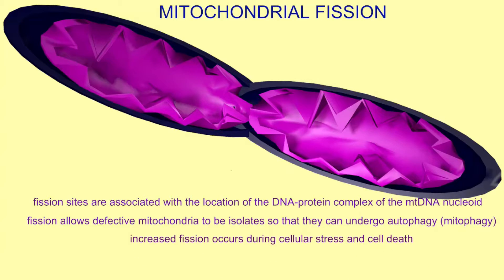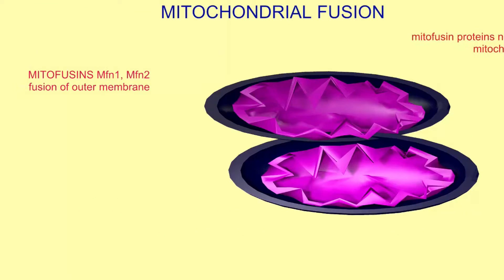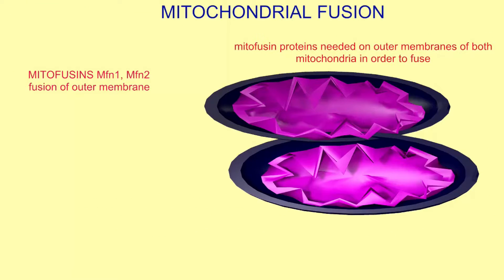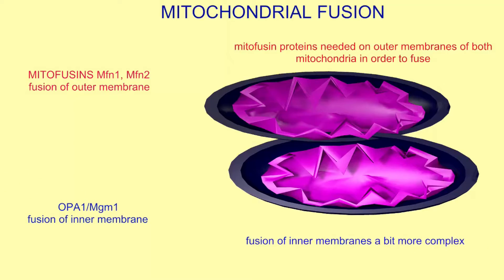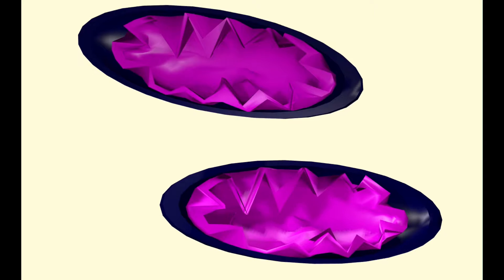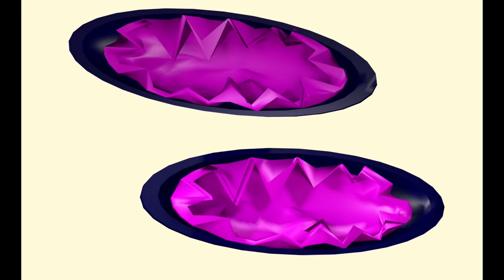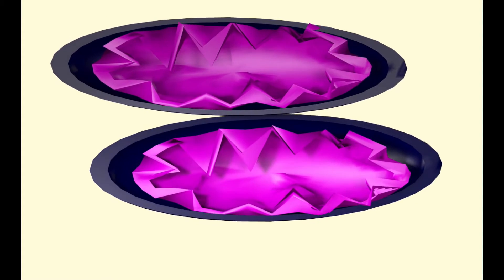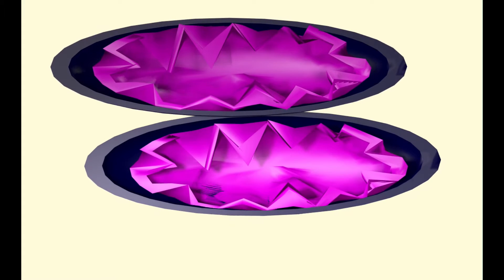Increased fission occurs during cellular stress and cell death. There are specific genes producing proteins which are required for the fusion of the outer membranes — the mitofusins — and other proteins needed for the fusion of the inner membrane, which is a bit more complex.